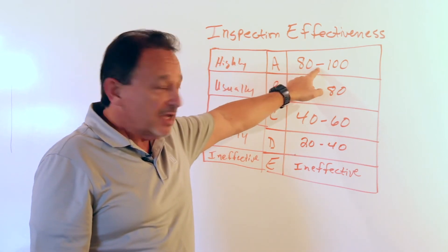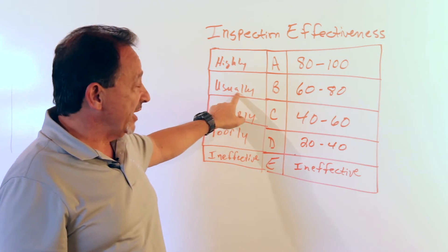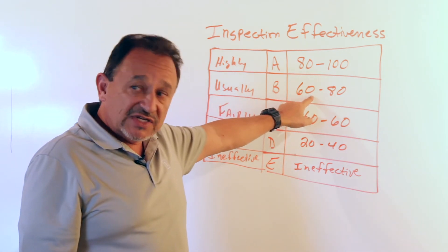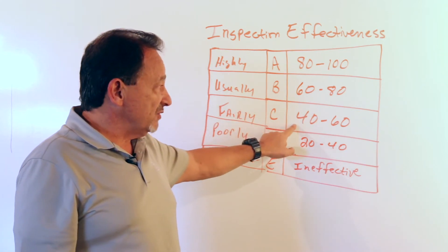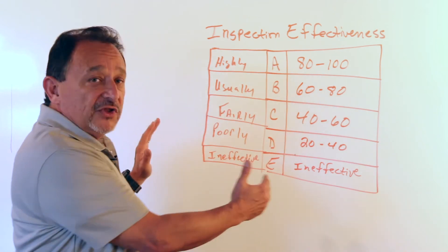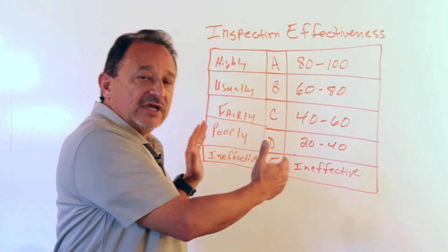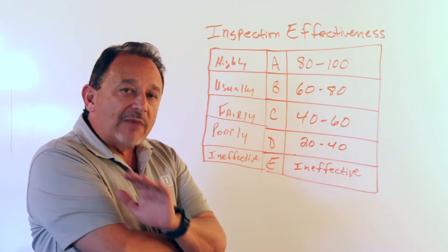A B level strategy, a usually effective strategy, would find it 60 to 80 percent of the time. A C level, or fairly effective strategy, would find it 40 to 60 percent of the time, and so forth. Hopefully you can see how this would factor into a confidence calculation - how probable is it that we found the damage we were looking for.